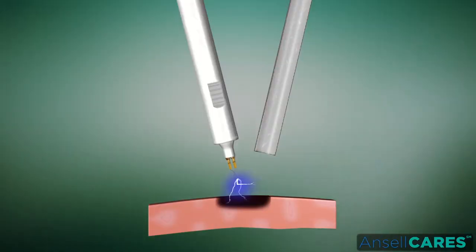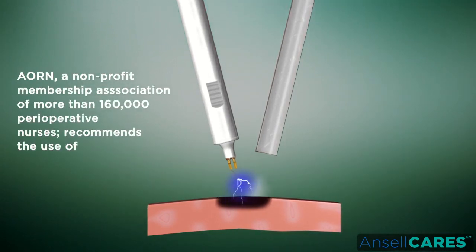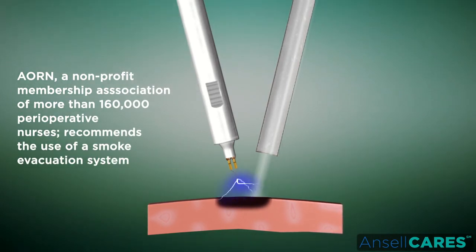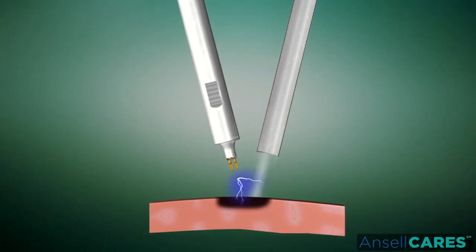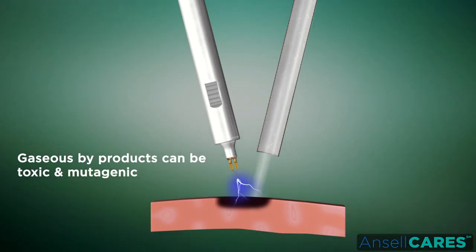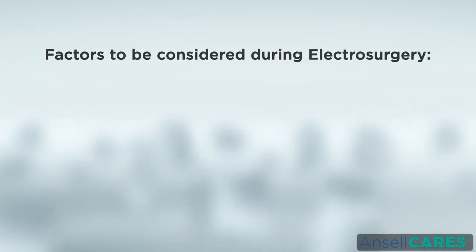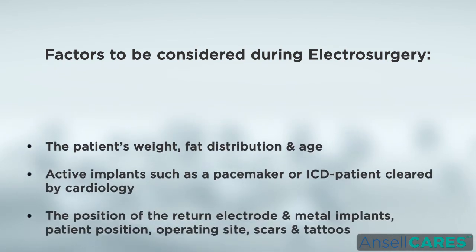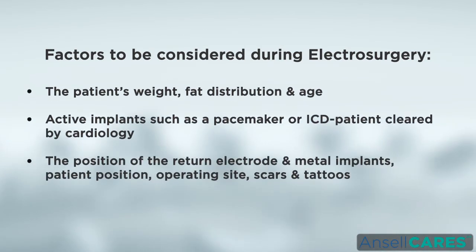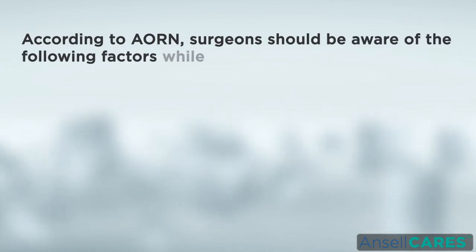AORN — a non-profit membership association of more than 160,000 perioperative nurses — recommends the use of a smoke evacuation system to protect perioperative personnel from inhaling smoke generated during electrosurgery. AORN cites the potential for bacterial and viral contamination of the smoke and warns that gaseous byproducts can be toxic and mutagenic. According to AORN, the following patient factors should be considered during electrosurgery: the patient's weight, fat distribution, and age; active implants such as a pacemaker or ICD with patient clearance by cardiology; the position of the return electrode; metal implants; patient position; operating site; and scars and tattoos.